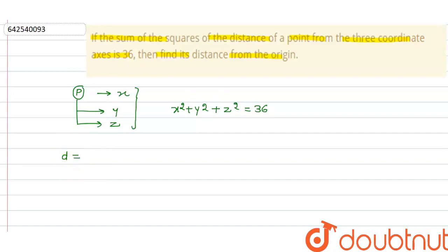D can be given as under root: 0 minus x to the whole square, similarly 0 minus y to the whole square, and again 0 minus z whole square.